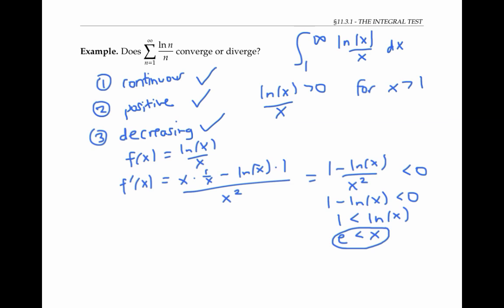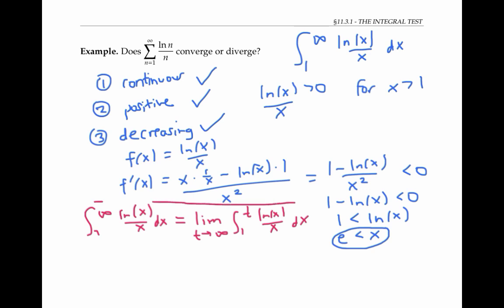Next, we need to figure out if this integral converges or diverges. This is an improper integral, so by definition it's the limit as t goes to infinity of the integral from one to t of ln x over x dx. We can use u-substitution to evaluate it, where u equals ln x and du equals one over x dx.